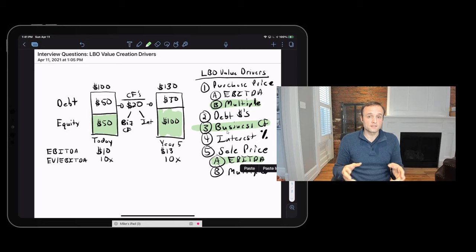So to summarize, the way I would answer this in an interview is the core value creation drivers in an LBO are the multiple we pay, which affects our purchase price, the cash flows the business generates on an underlying basis, which drives our pay down, and then the growth of EBITDA over the course of our ownership, which drives our exit sale price or exit value. And those are the core three drivers.